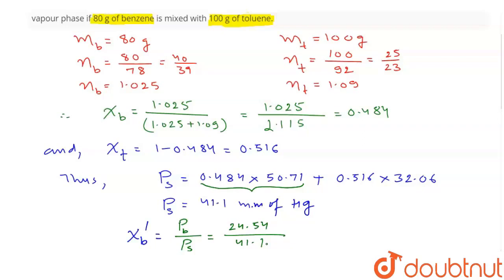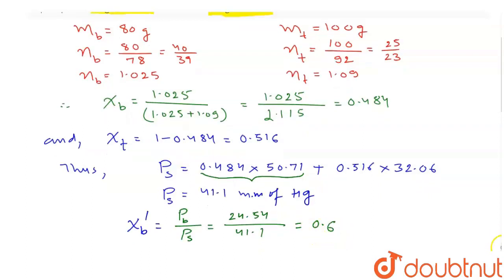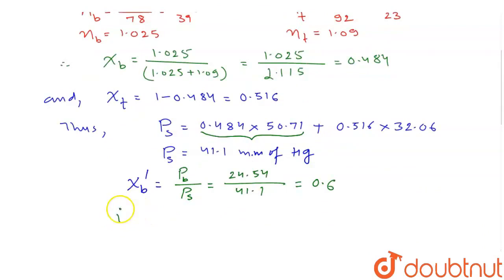This equals approximately 0.6. So finally, in the vapor phase, what is the mole fraction of benzene? It is approximately 0.6. This is the final answer.